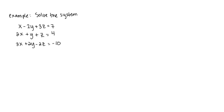Now we're going to solve a triple system. I have three equations, each with three variables x, y, and z. It's okay if one equation is missing a variable — it just means the coefficient is zero. We need three equations to solve for three variables. I like to label the equations A, B, and C. The method uses both elimination and substitution, working two equations at a time to eliminate one variable, chipping away until we've solved the system.